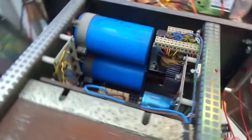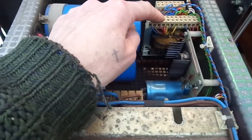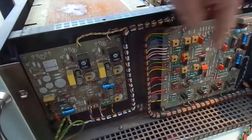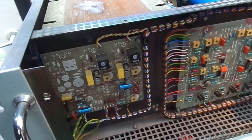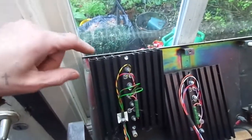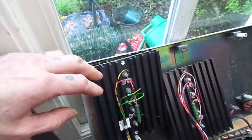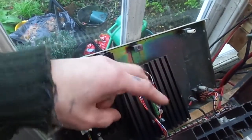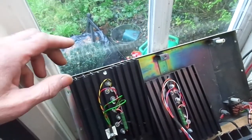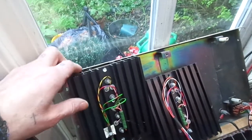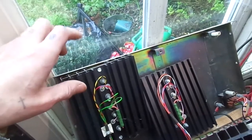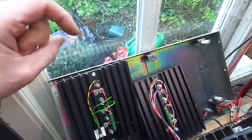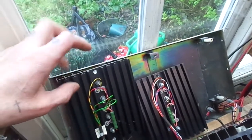And then we've got a smaller transformer here which I presume powers the control circuits. And then at the back we've got one, two, four, six, eight series pass transistors which are 2N3442 TO3 transistors.